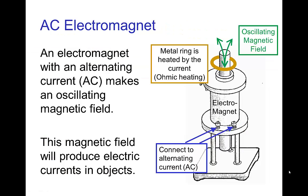Now, instead of physically moving a magnet back and forth, I can use an alternating current electromagnet. When I have an electromagnet with alternating current, when the current is moving one way, the north pole is on one side, and then when the current moves the other way, the south pole is on that side. So basically I can create an oscillating magnetic field using an electromagnet driven by alternating current. That alternating oscillating magnetic field will produce a current in objects. So if I put a metal ring near this AC magnet, I'll notice that it starts getting hot by ohmic heating, which tells me that there's a current in that metal ring.